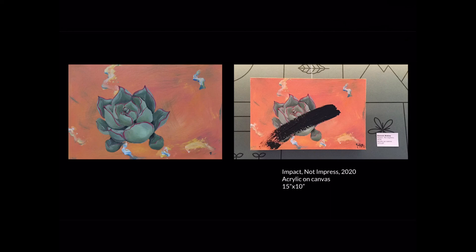I actually made an art piece surrounding this concept — kind of a critique on aesthetics itself, impressive technique versus being impacted by the meaning. I rendered this plant pretty realistically, and if I just left it at that — pictured on the left — people might be really impressed with my technique or how beautiful it is. But instead I decided to slash my brush through it with thick black paint to show that that doesn't always matter. Sometimes the meaning behind artwork is what you're meant to take away from it.